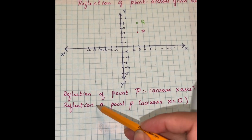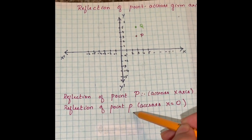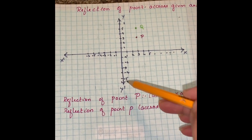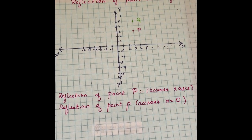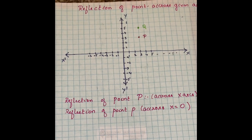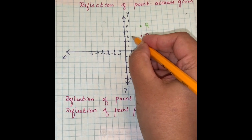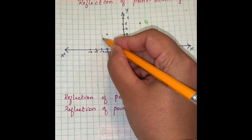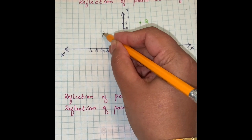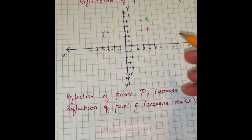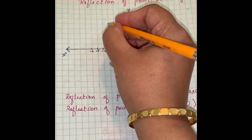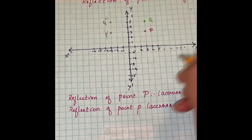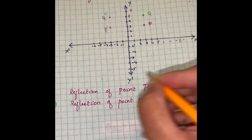To find the reflection of point P across x equals 0, the line is the y-axis. Count three units from P to the y-axis, then three units on the other side — that gives P prime. Similarly, Q prime is found by reflecting Q across the y-axis in the same manner.